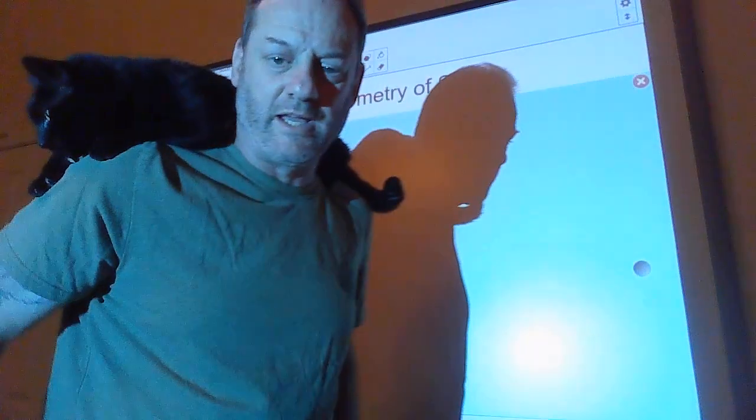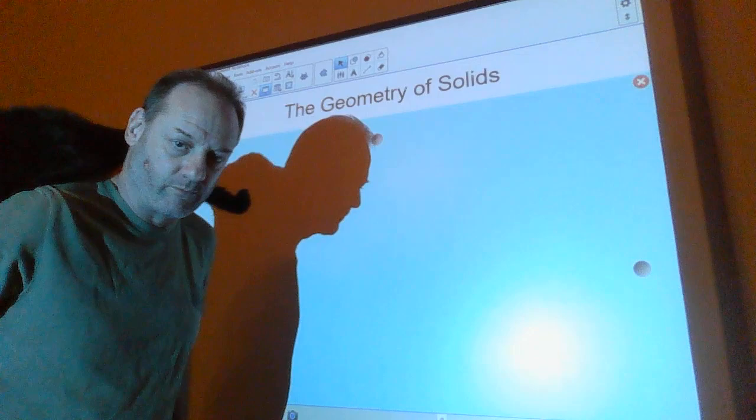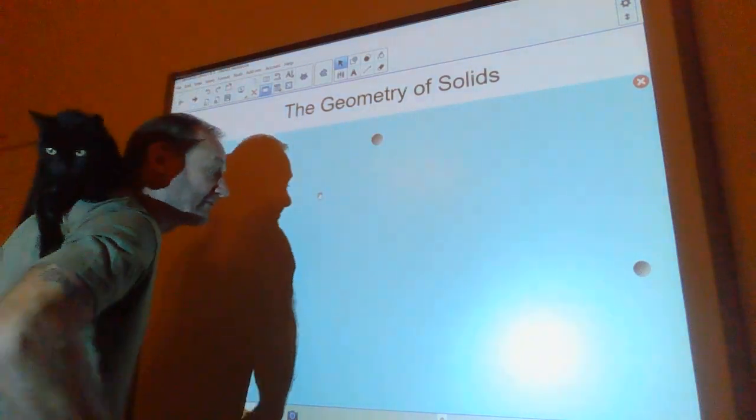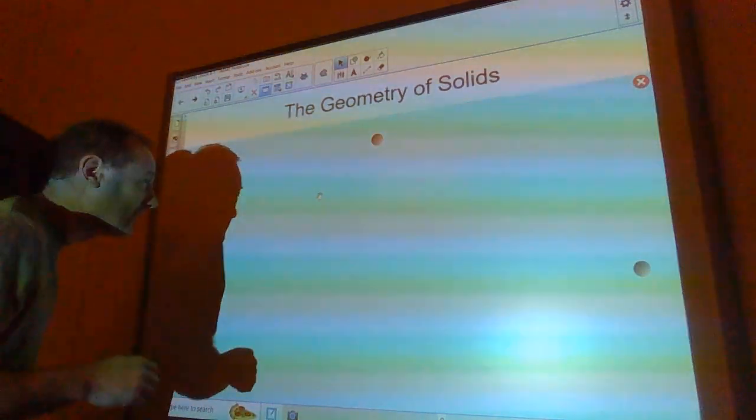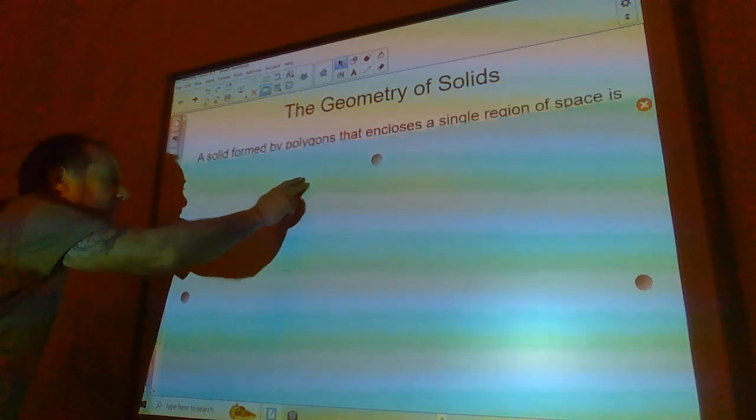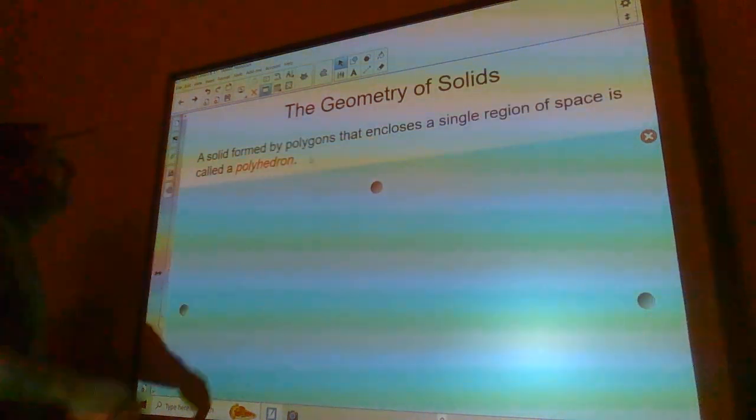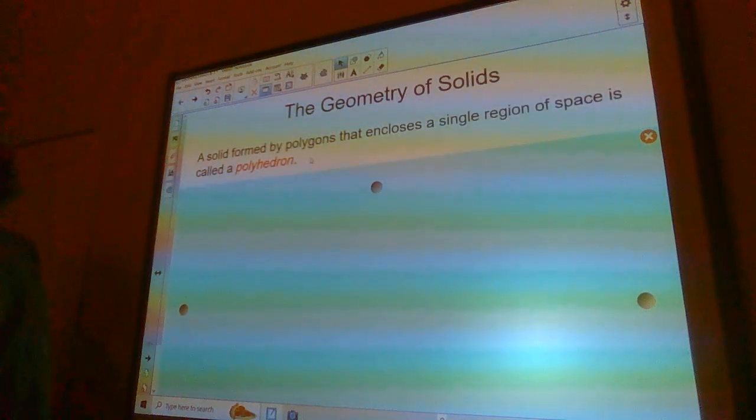Hello everybody! Today I'm here with Luna the Math Cat and we're going to do the geometry of solids. A solid formed by polygons that encloses a single region of space is called a polyhedron.